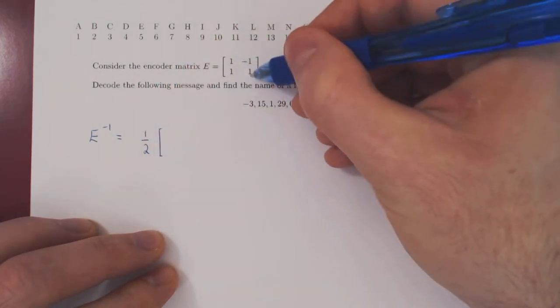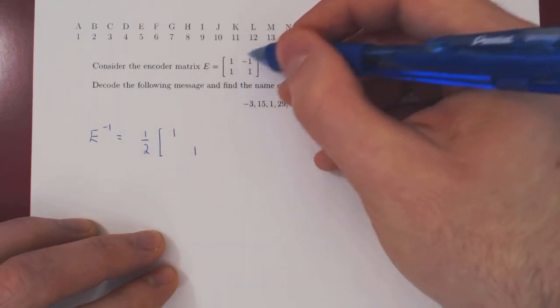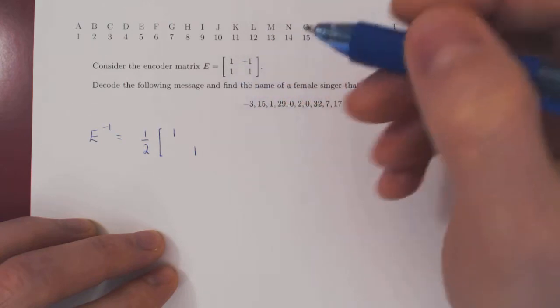Times, we flip the diagonal entries, so 1, 1, and we negate the other two entries, so we'll get negative 1, 1.